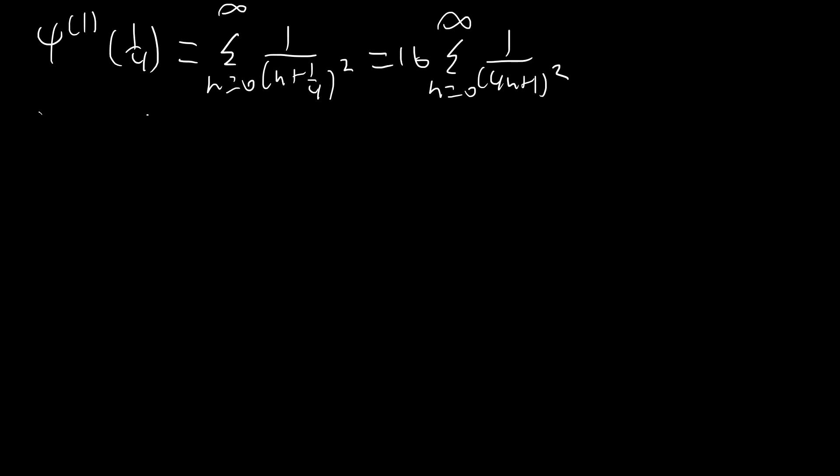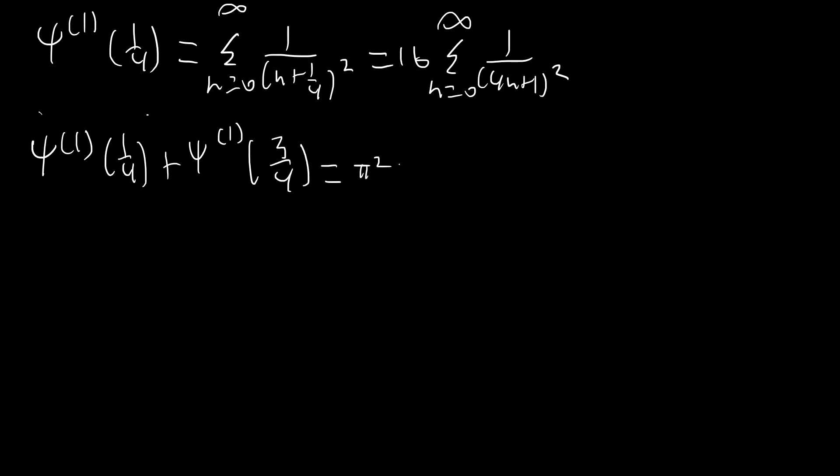This series can't be evaluated using the zeta function trick we used before. But using the reflection formula, we can compute trigamma(1/4) + trigamma(3/4) equals π²·csc²(π/4). Since csc(π/4) = √2, we get csc²(π/4) = 2, so trigamma(1/4) + trigamma(3/4) = 2π².